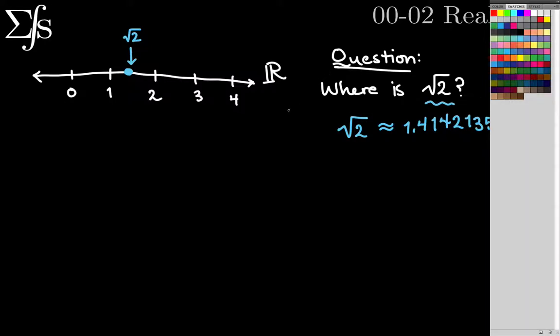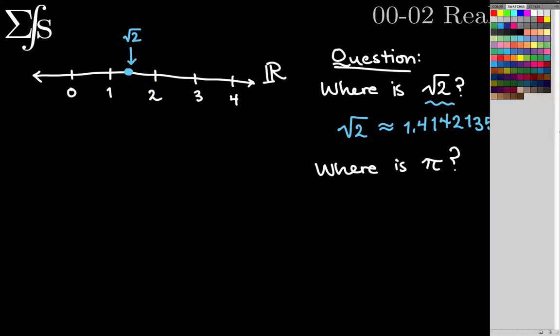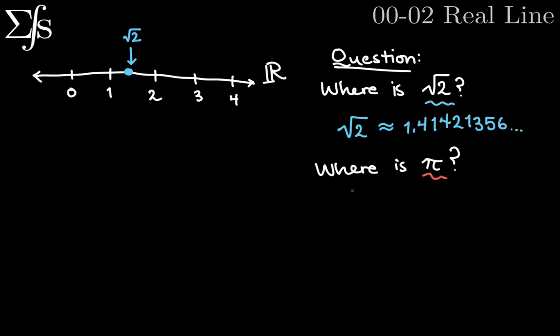All right. So now, let's say where is pi? Let's pick a nice color for pi, maybe this orange. So pi is approximately 3.14159265. I guess that's enough digits. So pi should be 3.14 something. So that means it's between 3 and 4, but it's pretty close to 3. It's just a little bit after 3. So let's say it's about here. So that's where pi is.